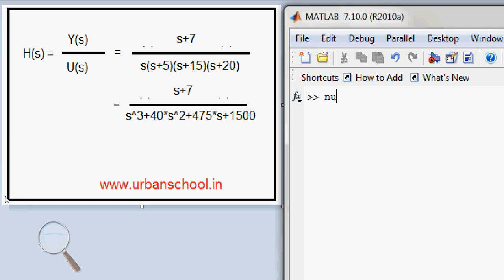Now take my numerator as num - num is a variable which will store the value of the numerator which is 1 comma 7. And the denominator, den is a variable which will store the coefficients of the denominator: 1, 40, 475, and 1500.